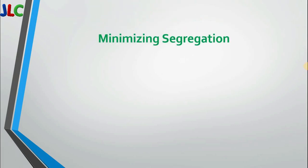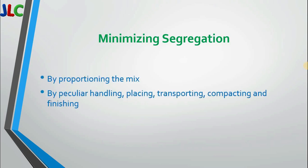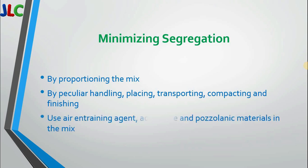How to minimize segregation: By properly proportioning the mix. By handling the concrete carefully during placing, transporting, compacting, and finishing — these processes should be carried out carefully. Air entraining agents, admixtures, and pozzolanic materials can also be used to minimize segregation.